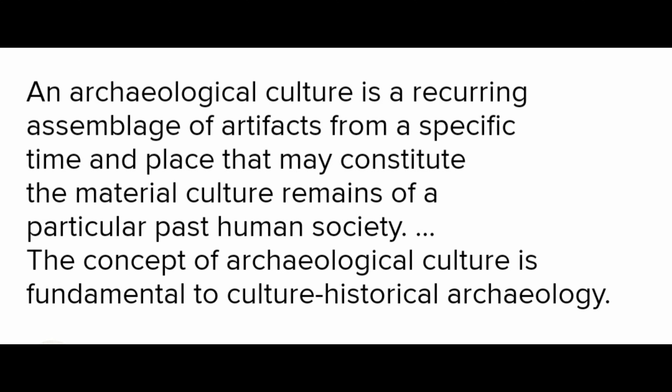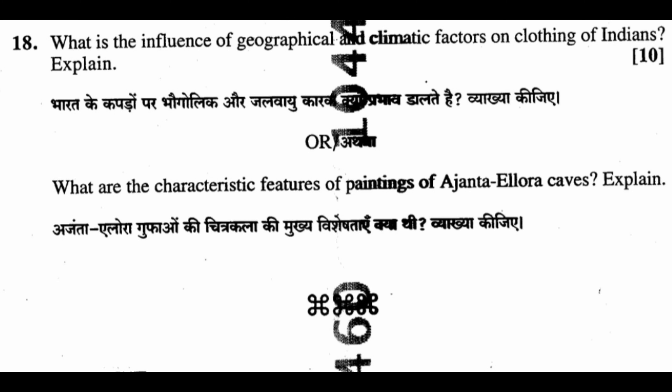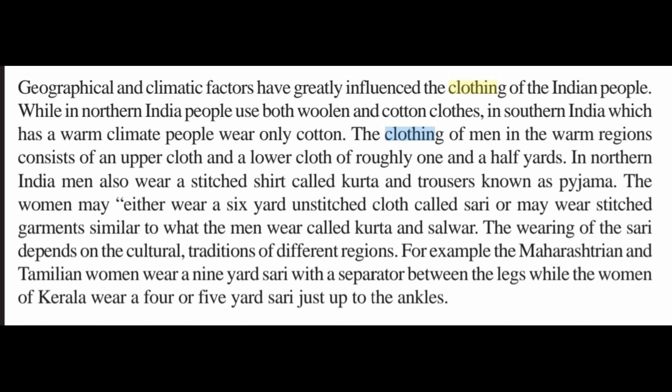Question 18: What is the influence of geographical and climate factors on the clothing of Indians? Explain. Geographical and climate factors have greatly influenced the clothing of Indian people. While in northern India people use both woolen and cotton clothes, in southern India, which has a warm climate, people wear only cotton. The clothing of men in warm regions consists of an upper cloth and lower cloth of roughly one and a half yards. In northern India, men also wear a stitched shirt called kurta and trousers known as pyjama. Women may either wear a six-yard unstitched cloth called a saree or stitched garments similar to what men wear — kurta and salwar. The wearing of the saree depends on the cultural traditions of different regions; for example, Maharashtrian and Tamilian women wear a nine-yard saree with the cloth passed between the legs, while Kerala women wear a four or five yard saree just up to the ankles.